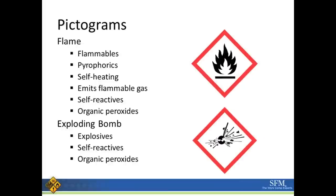The next pictogram is a flame, which will be used for flammables, self-heating chemicals, or self-reactives. Below that is an exploding bomb, which will appear on any explosive chemical, a self-reactive, or potentially an organic peroxide.